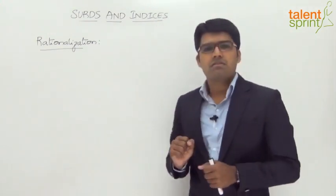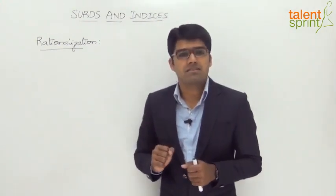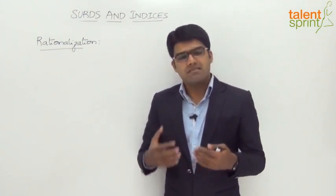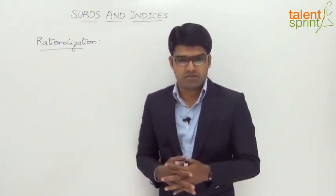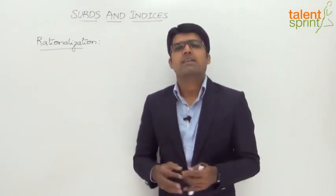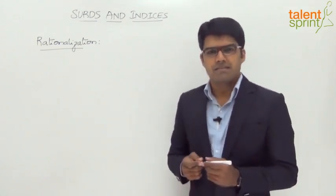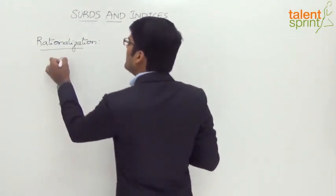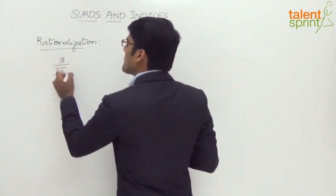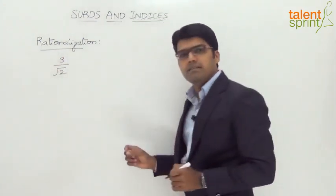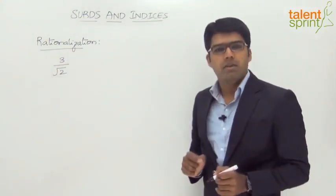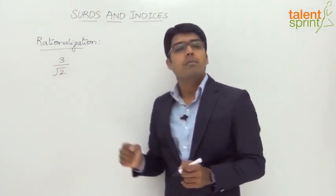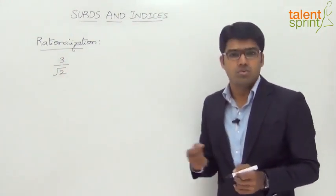In general, rationalization is a technique where we eliminate surds from the denominator of a fraction. Let's take a few examples to understand this. Let's say we have a number 3 upon root 2 — a fraction where the numerator is 3 but the denominator has a surd, root 2.